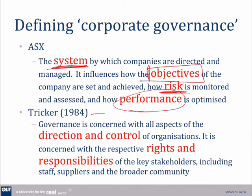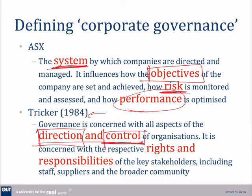Tricker is another famous author in the area, probably considered the father of corporate governance, who popularised it in the 1980s. He says that governance is concerned with direction and control. So again, we get this idea of strategy, direction, control, and monitoring. He also broadens it out to look at the various stakeholders, saying it's about the rights and responsibilities of those stakeholders.